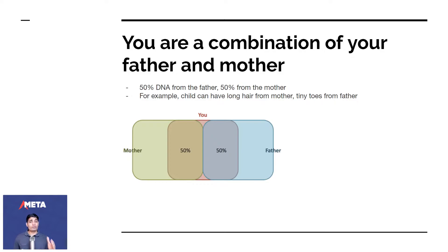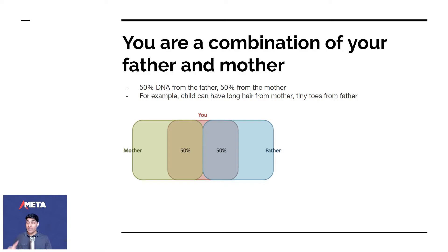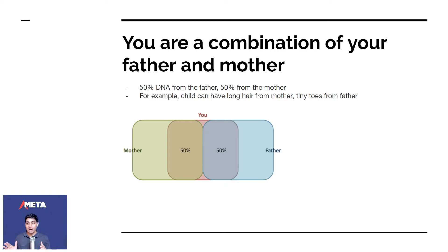You are a combination of your father and your mother — 50% of DNA from your father and 50% from your mother. A child can have long hair from the mother and tiny toes from the father. That's why someone might say you look like your uncle, your mom, or your dad. We pass on our genes but they're imperfect copies, which is why you look like a mixture. Beyond looks, your intelligence and behavior are also combinatorial from your parents.